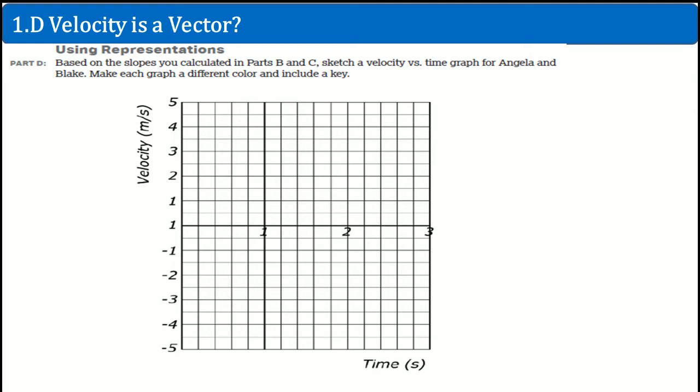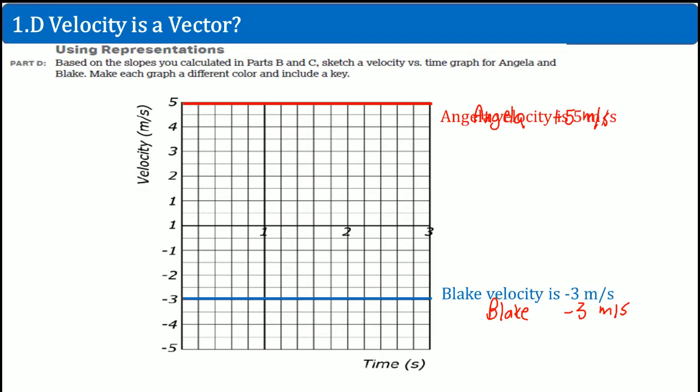So here, they want for you to graph this. We know from our calculation that Angelica was at 5 meters per second. There you go. And Blake was at negative 3 meters per second. And it was constant.